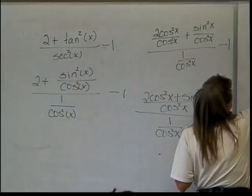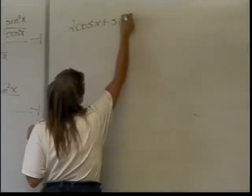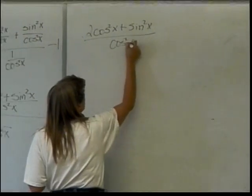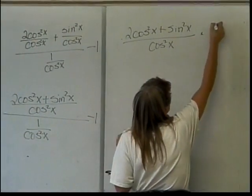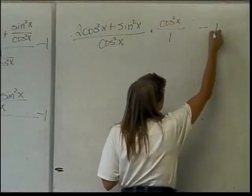So, this is going to be, when I work it out, is 2 cosine squared of x plus sine squared of x over cosine squared of x times cosine squared of x over 1. And then, that's still all minus 1.